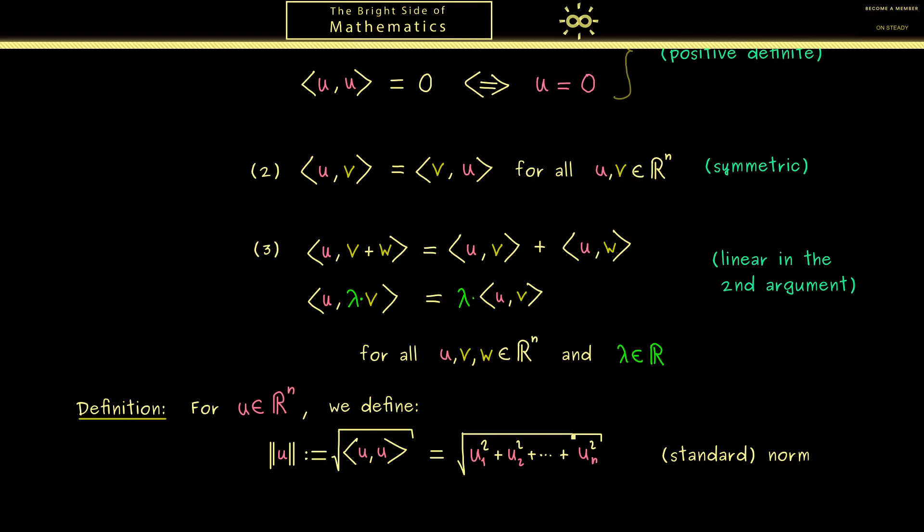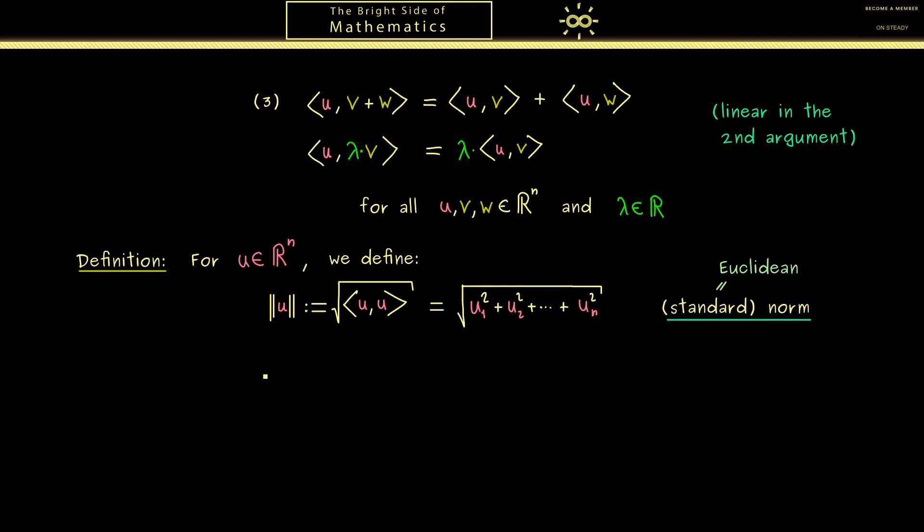For example in R^2 you know this formula when you talk about the Pythagorean theorem. However now here in general for vector u we call this the standard norm of u in R^n. And sometimes it's also called the Euclidean norm. Hence this is what you can immediately remember: we use a norm to measure a length.